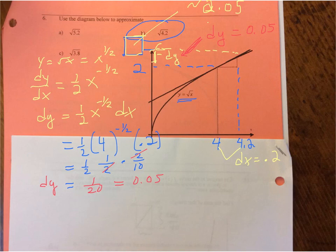So overall, our estimate, I'm using an approximation sign, is 2.05.